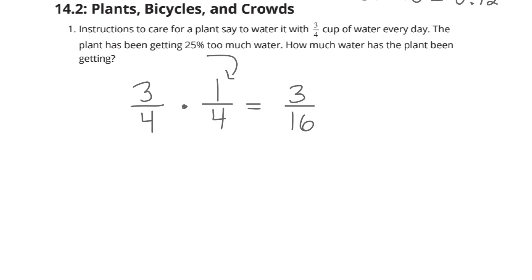Well, it's been getting 3/16 cups too much every day. And so if we take our 3/4 we're supposed to get and add the 3/16 extra that it's been getting, this will tell us how much water the plant's been getting. So we need common denominators, and common denominators for fourths and sixteenths is just sixteenths.